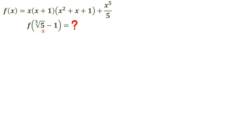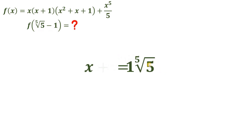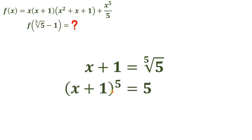What we're going to do is let x be equal to the 5th root of 5 minus 1. Now, we're going to add 1 on both sides. And we want to eliminate the 5th root, so let's raise both sides to the 5th power. So we have x plus 1 raised to the 5th power equals 5.